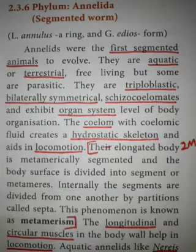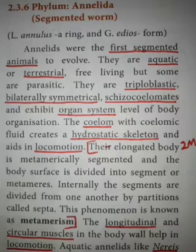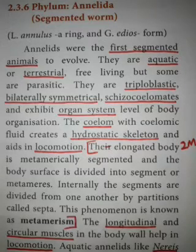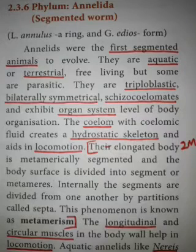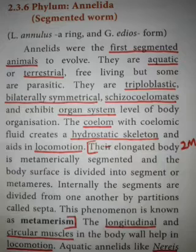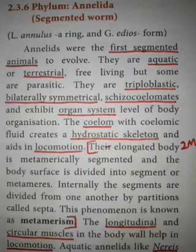They are schizocoelmates. The organisms which have a body cavity are called eucoelomates. Eucoelomates are of two types: schizocoelmates and enterocoelmates. Schizocoelmates have the body cavity formed by splitting of the mesoderm.